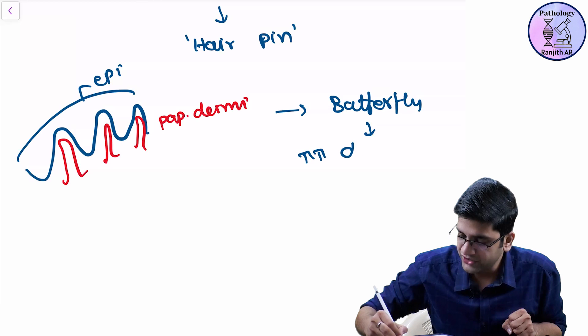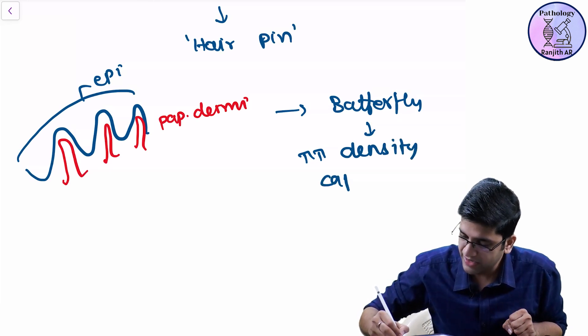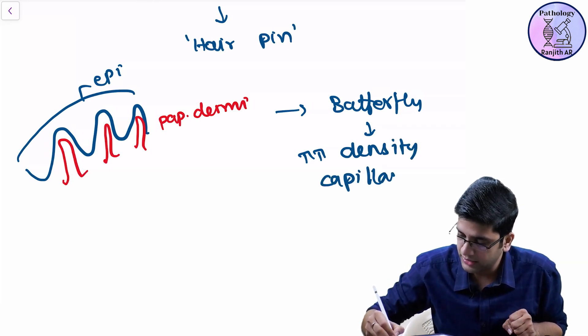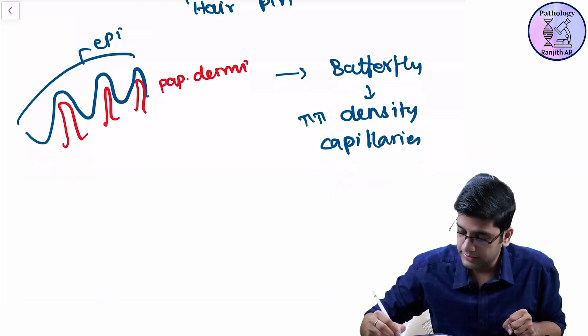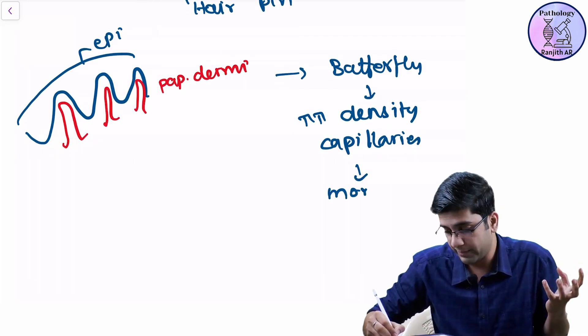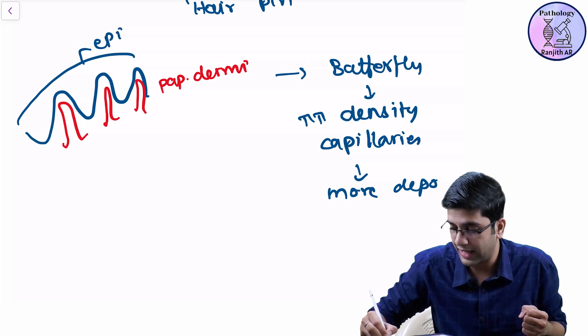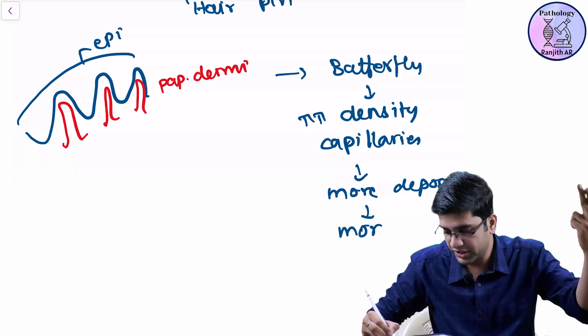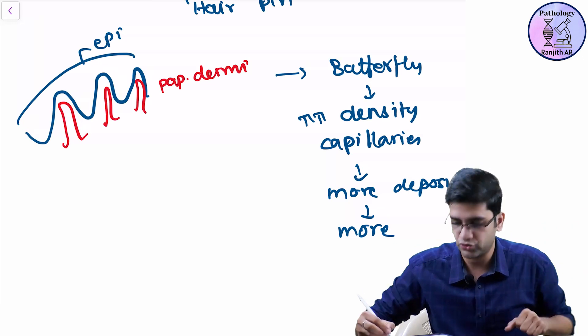You have increase in density of capillaries. When I have increase in density of capillaries and would have a problem, there will be more deposition, more damage. More deposition of the immune complex. You'll have more damage. The patient presents to me first with my malar and discoid rash.